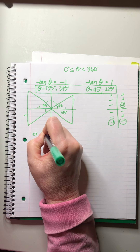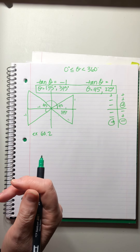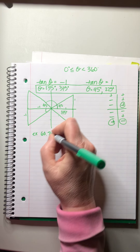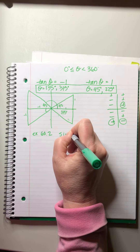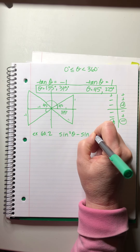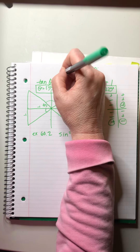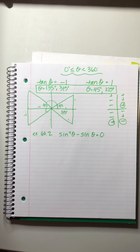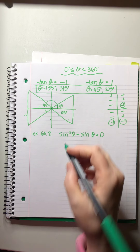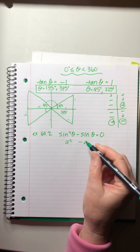Let's try another one. These are fun because we get to use basic algebra rules to do a little factoring and then apply our trig knowledge. Example: sin²θ - sin θ = 0. Again, the domain limitation 0° ≤ θ < 360° applies to all of them.